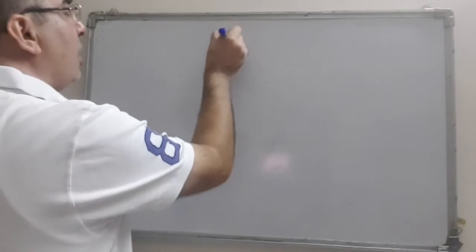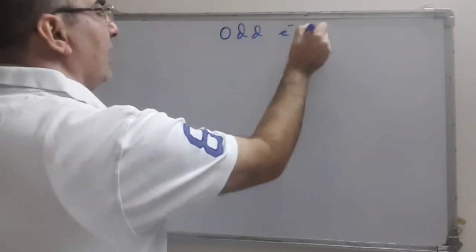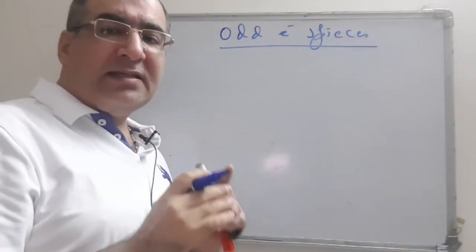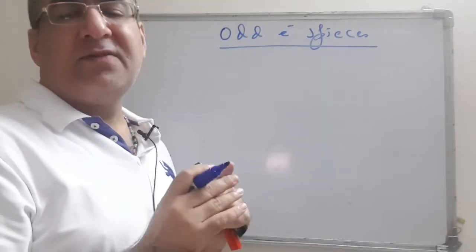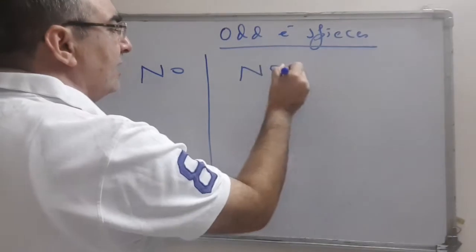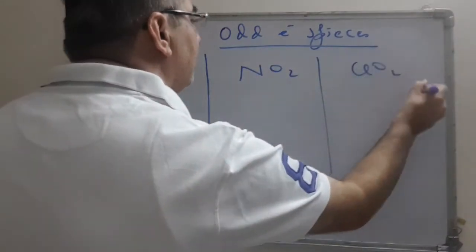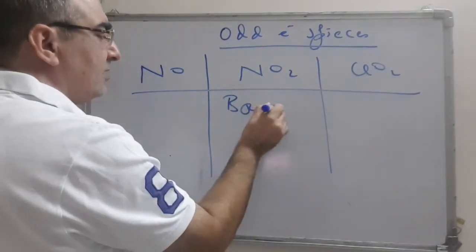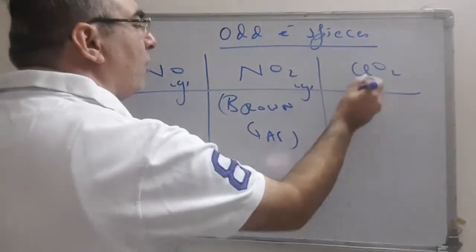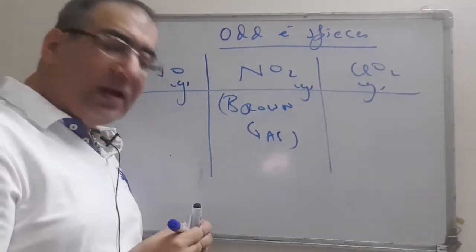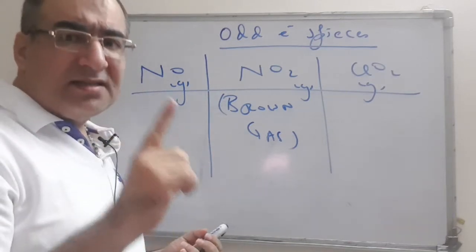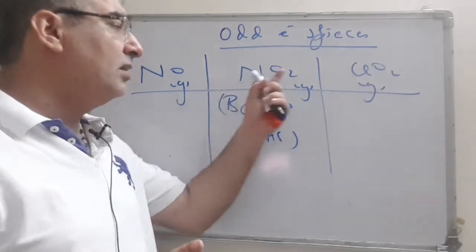In odd electron species, one electron is always left unsatisfied, unbonded — you can say it's a free electron. Mostly three odd electron species you should know: one is NO, one is NO2, and the third is ClO2. NO2 is a very famous brown gas, and whenever you draw the electron dot structure of all these three substances, you will come to know that the odd electron is the one left unsatisfied, unbonded, unpaired.